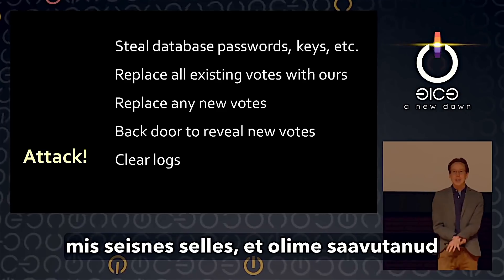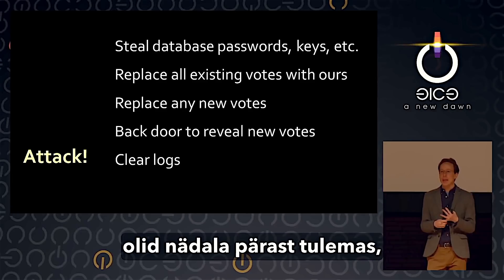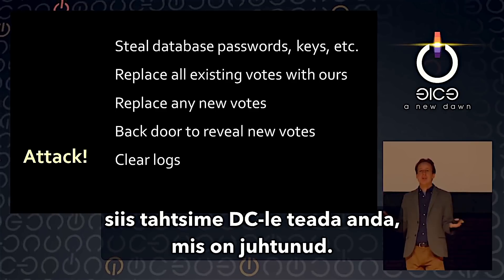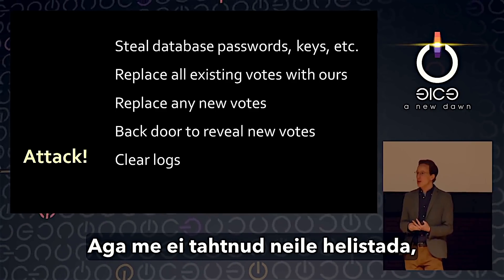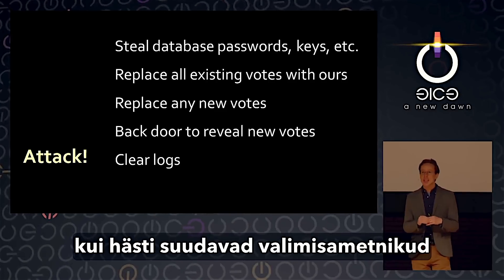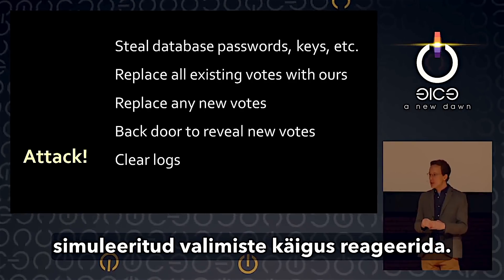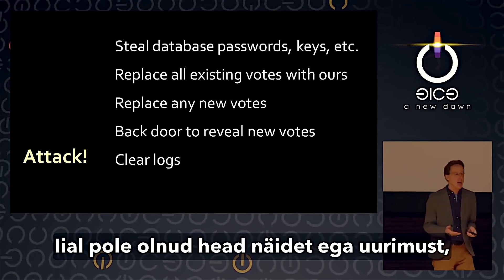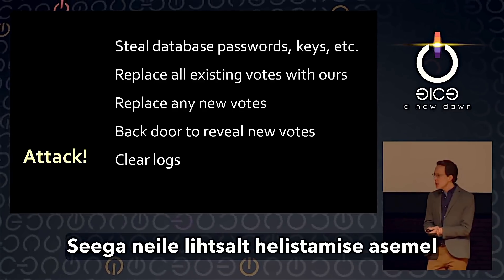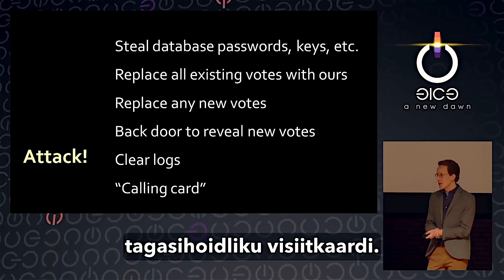We had gained complete control of the system, but the real election was then about a week away. We wanted to let D.C. know what happened, but we didn't want to just call them on the phone — we thought it would be really interesting to test how well election officials could detect and respond to an attack during a simulated election. So instead of just calling them, we decided to leave a not-so-subtle calling card.